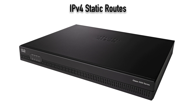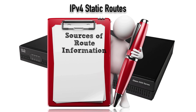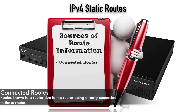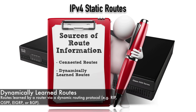Let's think about how a router gets routing information in its IP routing table. Specifically in this video, we're going to be considering IP version 4 static routes. There are some different ways that an IP version 4 router can get that routing information into the IP routing table. If a router is connected to a network — if I'm directly connected to 10.0.0.0/24 — then I know how to get to it. That's a connected route, one way that a route can get into a router's IP routing table.